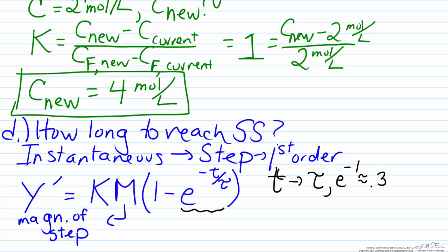0.368. So therefore what that means is the fact that y prime will equal KM times 0.632.